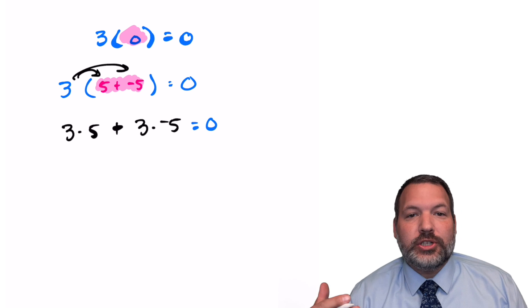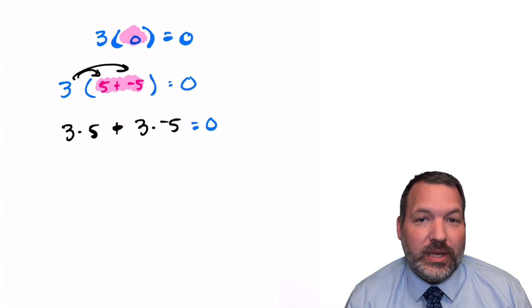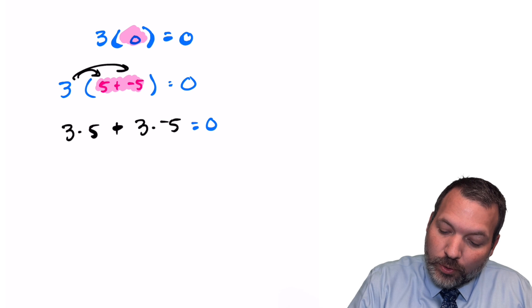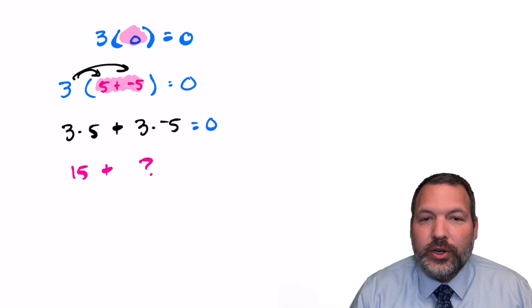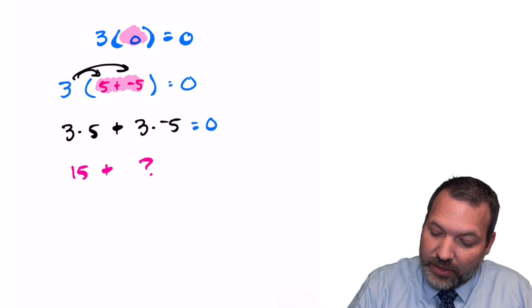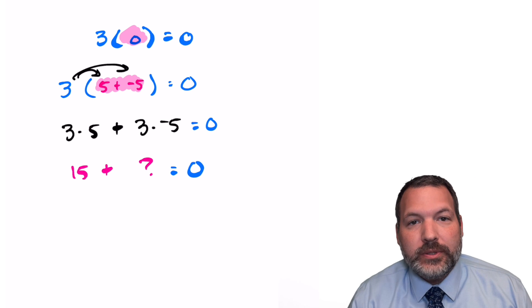But again, the distributive property doesn't change any values, so this should still be equal to zero. Three times five, of course, we can go ahead and say is 15, and let's say we don't know what three times negative five is, but we do know that this sum is supposed to be zero.